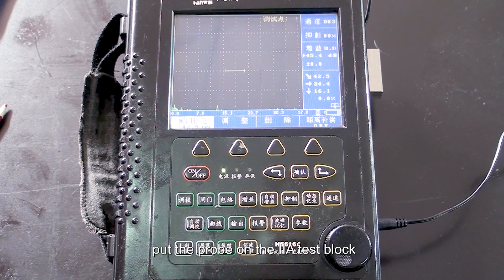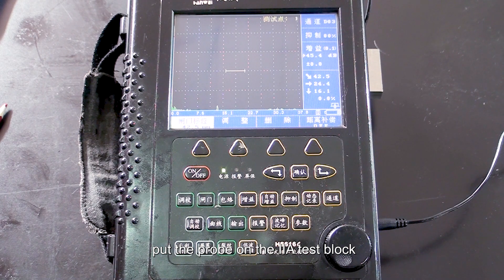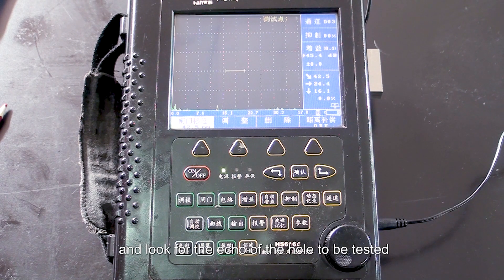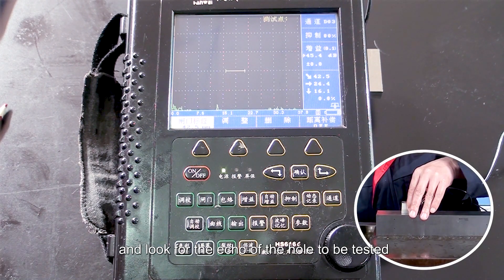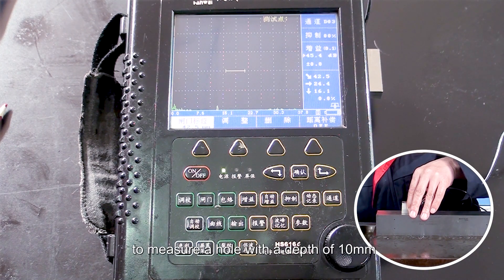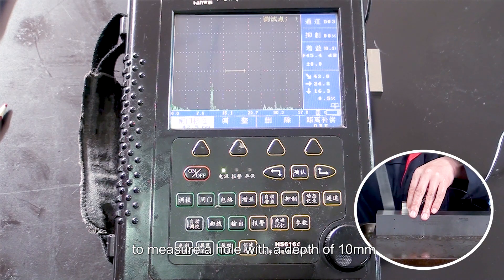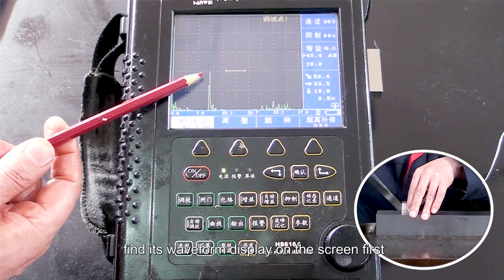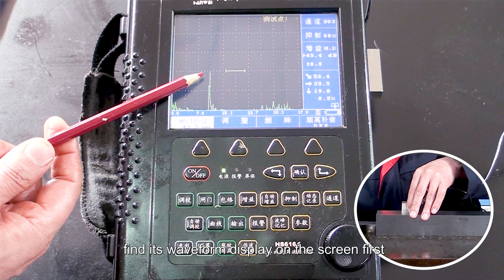At this time, put the probe on the IIA test block, and look for the echo of the hole to be tested. For example, to measure the hole with a depth of 10 mm, find its waveform displayed on the screen first.